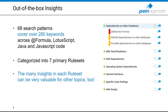Out of the box, Application Insights provides 68 search patterns that cover over 280 keywords across formula, load script, Java, and JavaScript code. Those patterns are categorized into seven primary rule sets — visible on the right-hand side — ranging from dependencies on other databases, mail dependencies, special interfaces, and various more. Inside each rule set you will find different insights, and those insights can be of value for many topics beyond the category they are in.